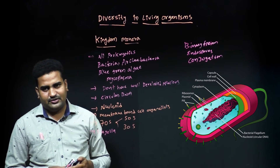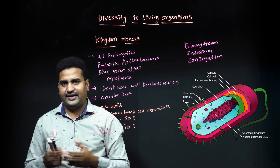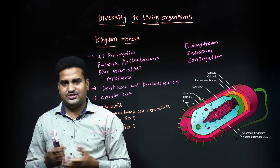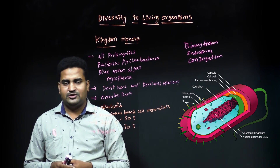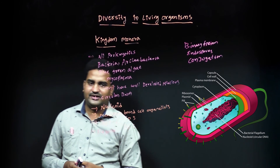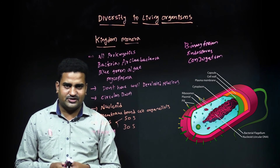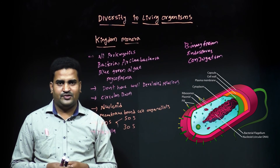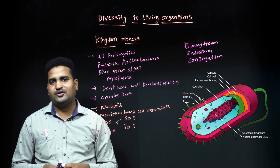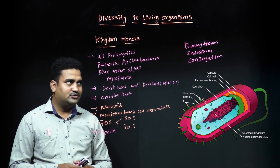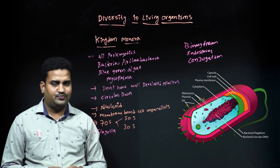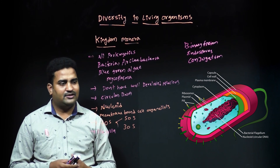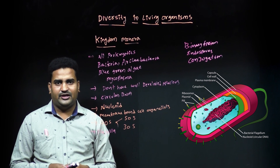In summary, prokaryotes do not contain a well-developed nucleus, and their circular DNA is naked in the protoplasm, held in a definite position in a structure called the nucleoid. Nucleolus and membrane-bound cell organelles are absent, and they contain 70S ribosomes. Some organisms are motile using flagella, while others cannot move. Reproduction occurs by binary fission, endospore formation, or conjugation. This is all about Kingdom Monera.